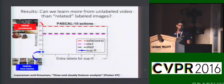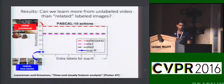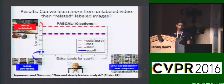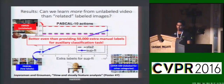Having established our advantages over these unsupervised methods, we now test if we can further improve over even supervised pre-training. To do that, we add extra manual labels to our supervised baseline. We find that adding even up to about 50,000 manual labels is not sufficient for the supervised baseline to match our method's performance on this task.